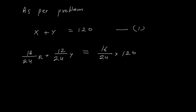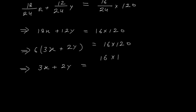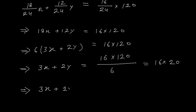As per the problem: x + y = 120, since the total weight of final gold is 120 grams — this is equation 1. Also, when I mix these two golds, the total pure gold must equal the 16-carat amount: (18/24)x + (12/24)y = (16/24)×120. Cancelling the denominator 24: 18x + 12y = 16×120. Taking 6 as common: 3x + 2y = 16×20 = 320. This is equation 2.